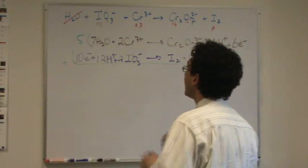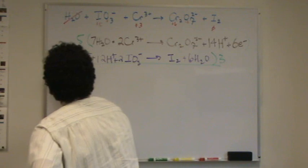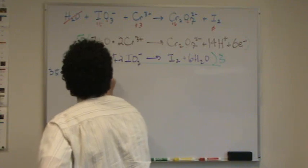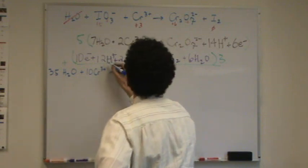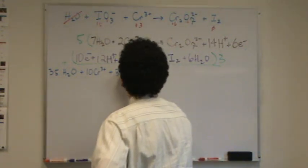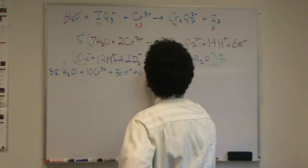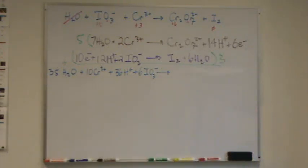So, let's write this out. So, starting with the left. It's 35 water plus 10 Cr 3 plus plus 36 H plus plus 6 IO3 minus. Okay. Let's just want to double check to make sure I multiplied everything correctly. I think it is. I'm not writing the electrons because I know they're gonna cancel.